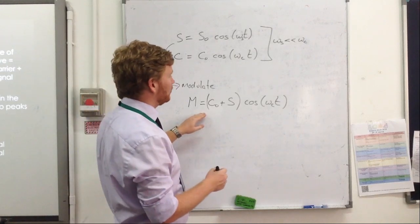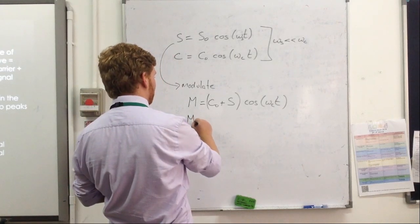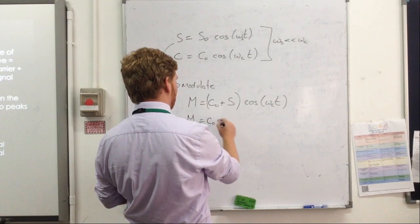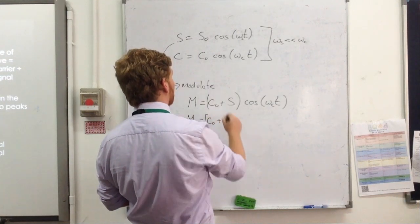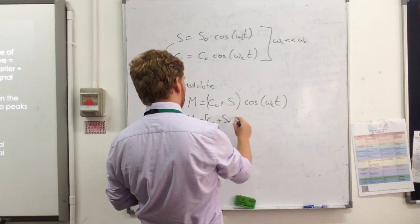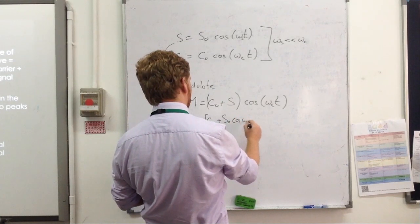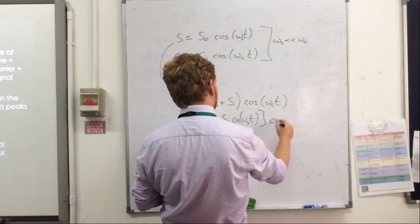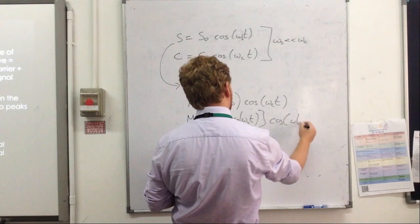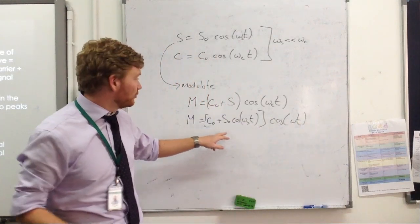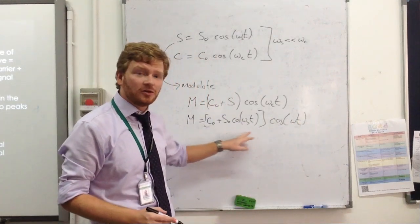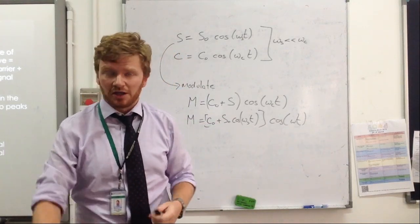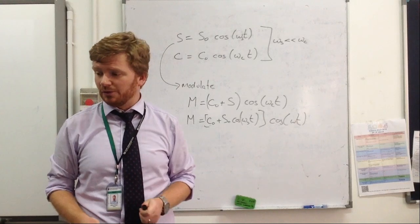Okay, if I expand this out, I could say that my modulated signal will be the carrier signal plus S-naught cosine omega S of t times cosine omega carrier t. And then you can see that I've sort of hidden this changing signal inside this signal. Okay, so that's the basics of AM modulation, or amplitude modulation.